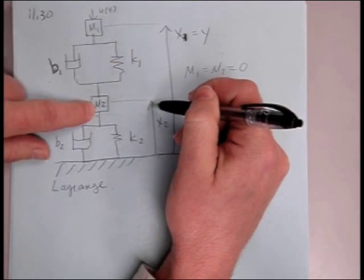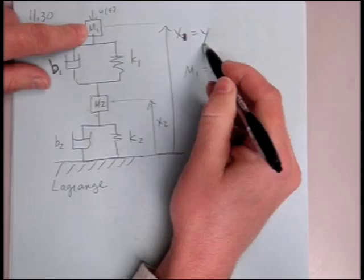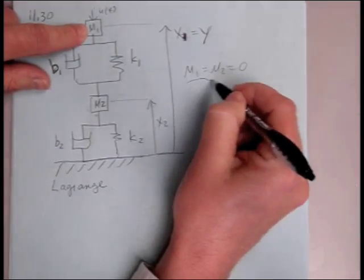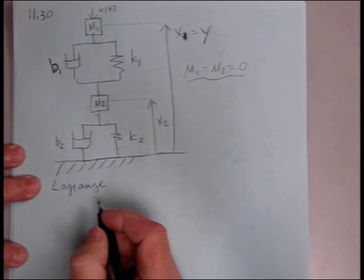Our first variable, x2, is from the ground to mass 2, and x1 is up to mass 1. Output y is x1, and it says assume that the masses are negligible. Okay, so we're going to assume our masses are 0.